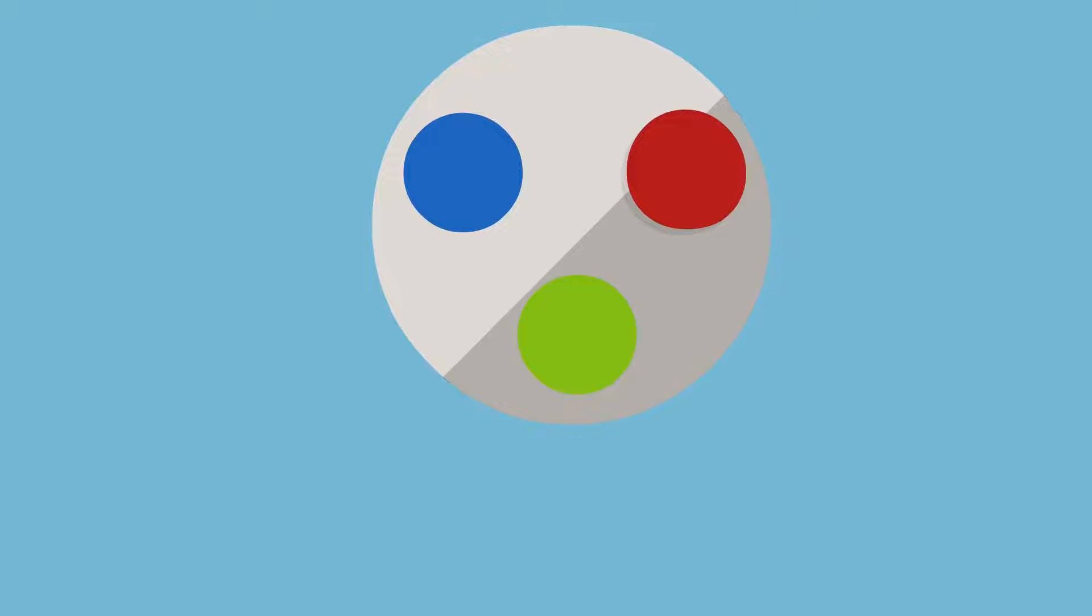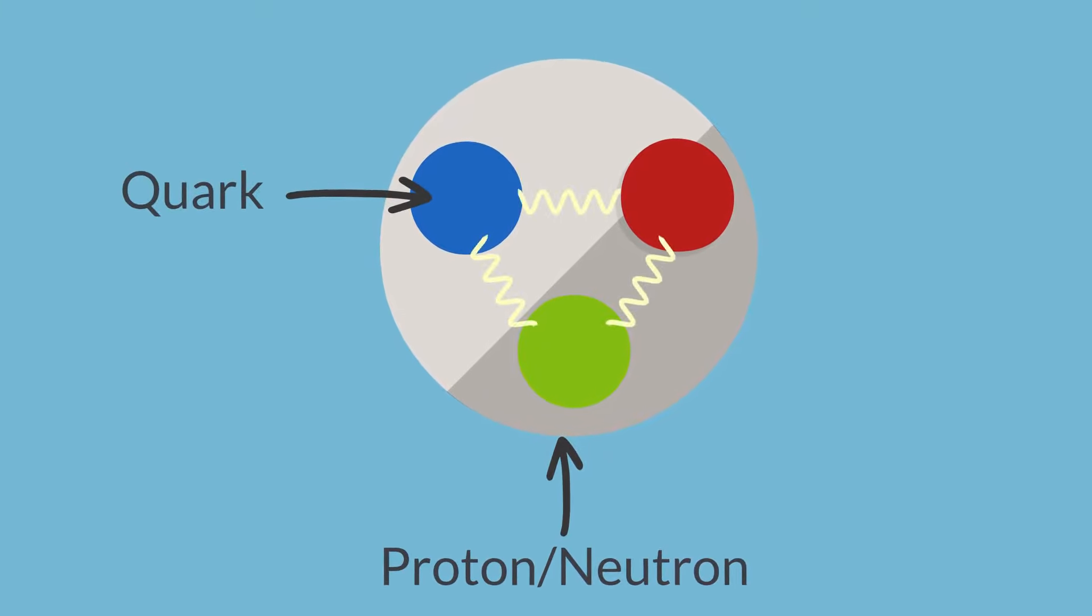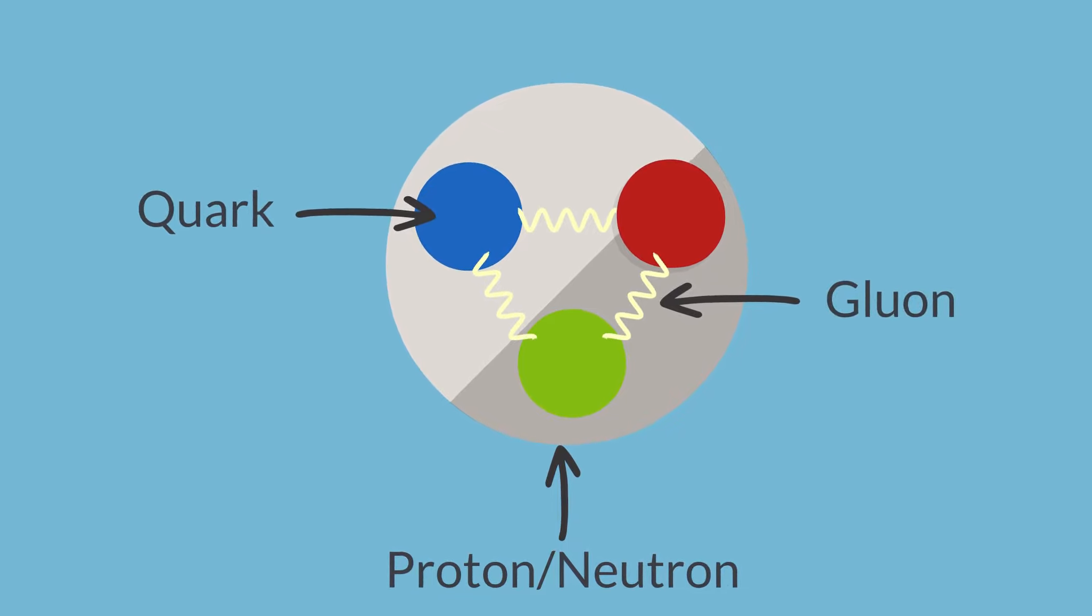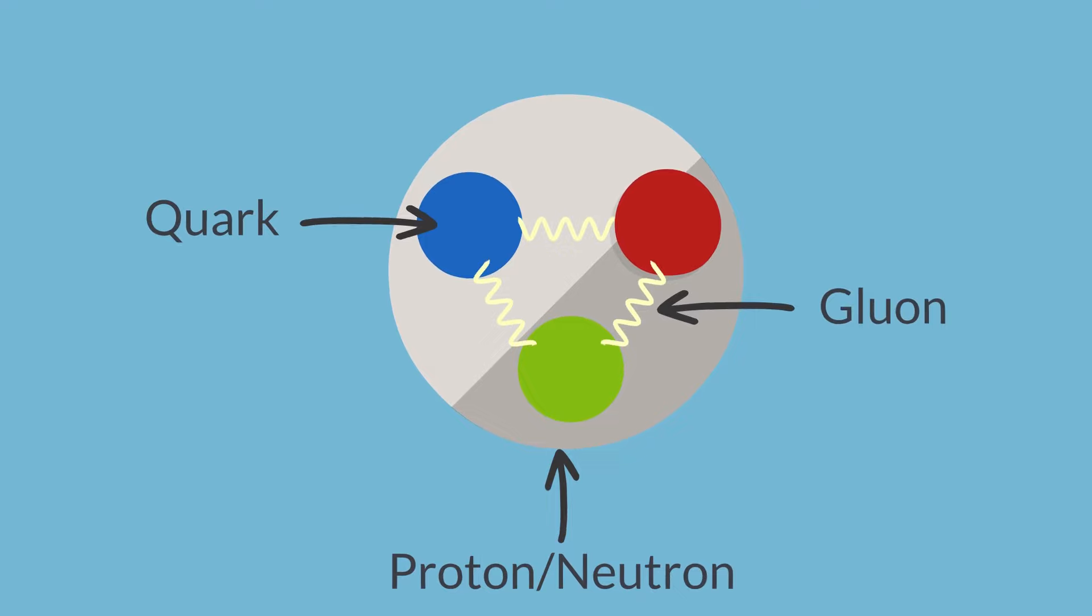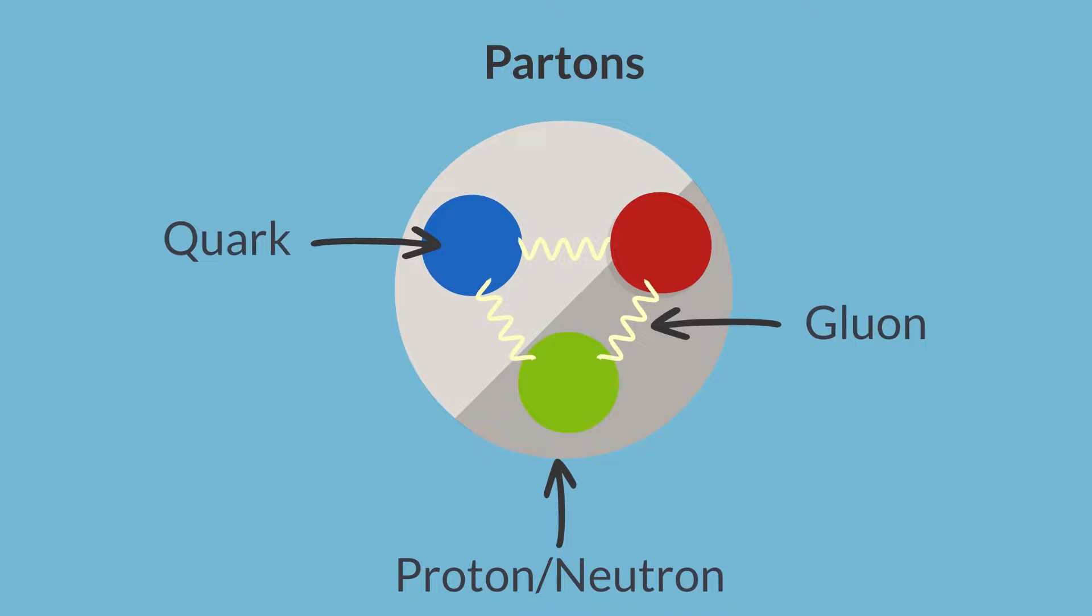These protons and neutrons can be split into smaller components still, called quarks, held together by gluons. Quarks and gluons are types of elementary particles that cannot be further subdivided. Collectively, quarks and gluons are known as partons.